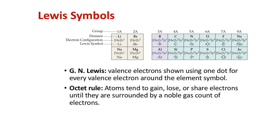Lewis symbols describe the valence electrons around a central atom with some intuition of how the atom might use those electrons to form bonds. Lithium has one valence electron — one dot. Beryllium has two valence electrons — two dots drawn on either side, so perhaps it could pair up and bond with atoms on either side, like making two bonds with two H atoms.